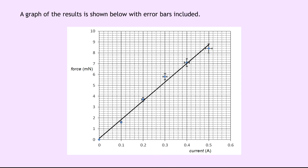The graph of the results is shown with error bars already included, so we don't have to draw it ourselves unlike in question 1. Notice that some points have different sized error bars, and some points don't have any error bars at all. The force on the balance and the current in the copper wire are linked by the formula F = ILB, where L is the length of wire in the magnetic field and B is the magnetic induction of the permanent magnet.